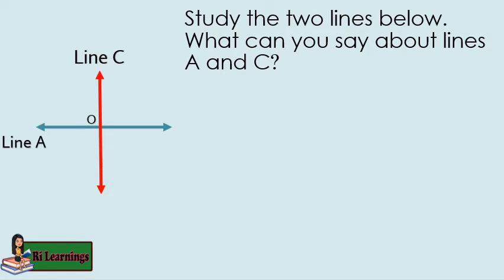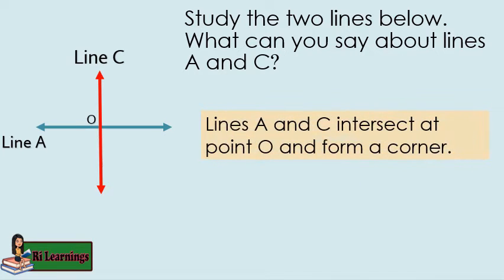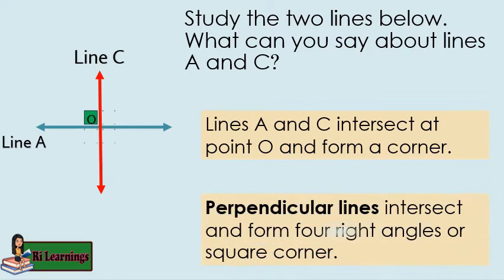Study the two lines. What can you say about lines A and C? Lines A and C intersect at point O and form a corner. Those lines are called perpendicular lines. Perpendicular lines intersect and form four right angles.